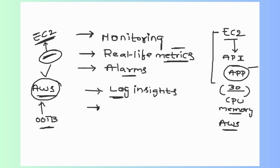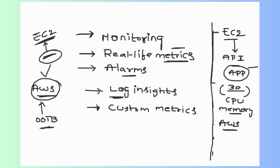The fifth feature is custom metrics. By default CloudWatch tracks CPU utilization as a metric for EC2 instances, but it does not track memory utilization. If you want memory utilization, you have to send custom metrics to CloudWatch. Using custom metrics, you can track your application, memory of your instance, and many other things.